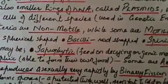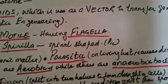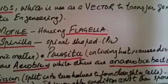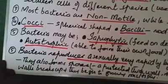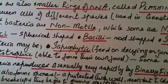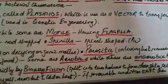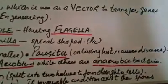Bacteria may be saprophytic in nature — that is, they feed on decaying or dead organic matter, and these bacteria act as decomposers. Bacteria may also be parasitic — their mode of nutrition is parasitic, meaning they attack living hosts, causing disease in plants and animals. Some bacteria are also autotrophic — they contain chlorophyll and are able to perform photosynthesis to form their own food. Some bacteria respire aerobically while others respire anaerobically.